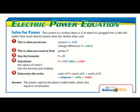So in the example it says the current in a clothes dryer is 15 amps when it's plugged into a 240 volt outlet. How much electric power does the clothes dryer use? So what we know in the problem is that the clothes dryer is going to pull a total of 15 amps of current.